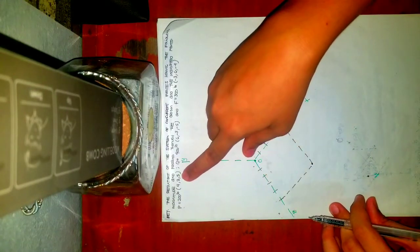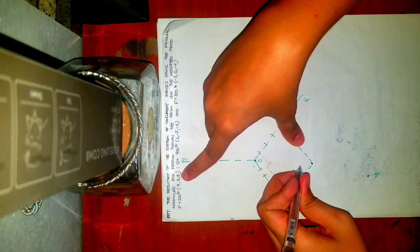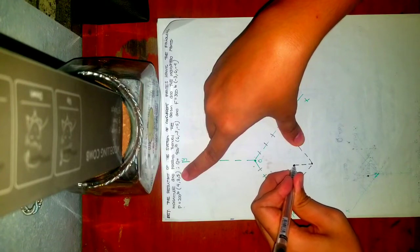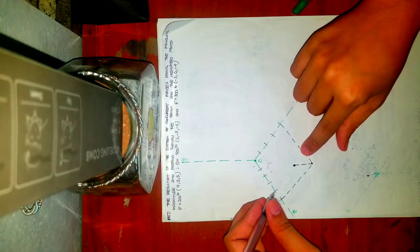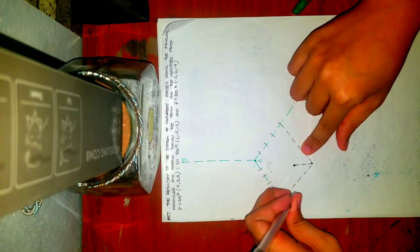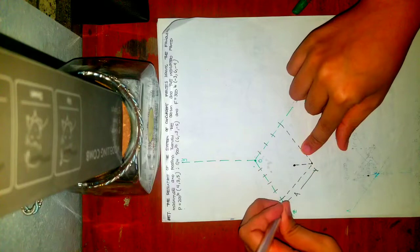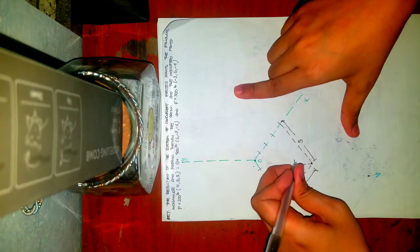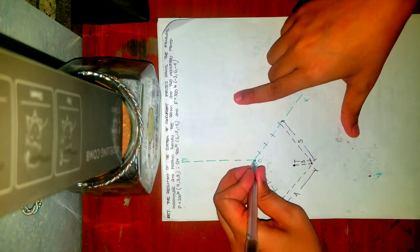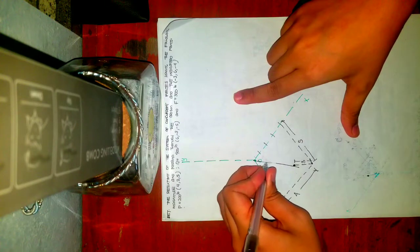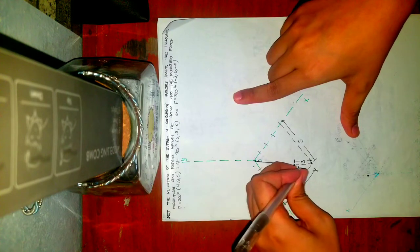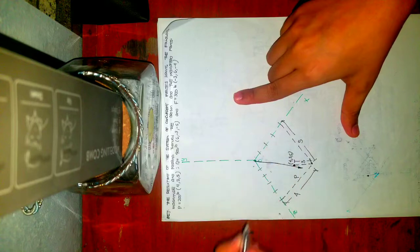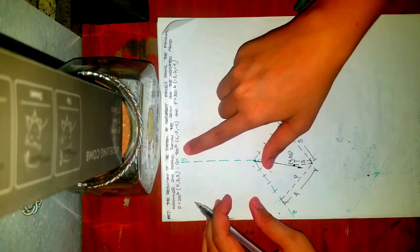So what does Y say? Y is positive 3, so go up 3 units. Let's say that is 3. So this is 4, this is 5, and this is 3 — connect them. This will be your force P, with coordinates (4, 3, 5). Next will be for force Q, with a magnitude of 400 pounds acting at coordinates (6, -3, -5).